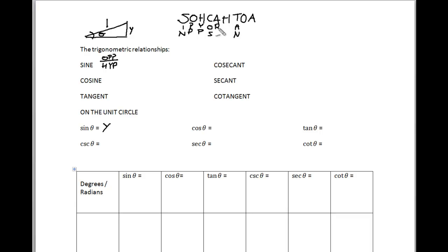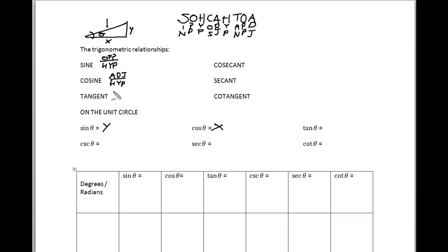Cosine is going to be adjacent over hypotenuse. Our adjacent side to theta is x over the hypotenuse. So cosine of theta from that triangle is x. Tangent is opposite over adjacent, so from that triangle tangent is opposite over adjacent, which would be y over x.